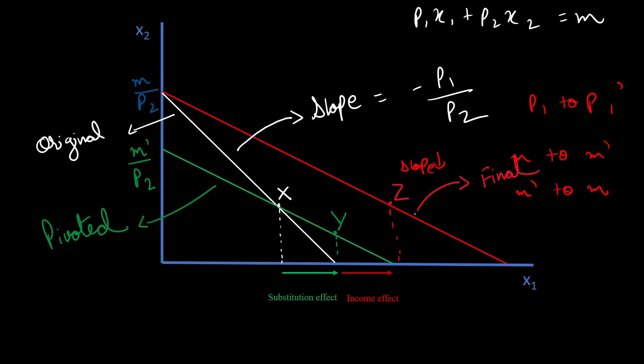And then, we are giving that money back to this person so that the income, again, changes from M dash to M. And then, there's a parallel shift. And we have a final budget line and Z being a final demand.